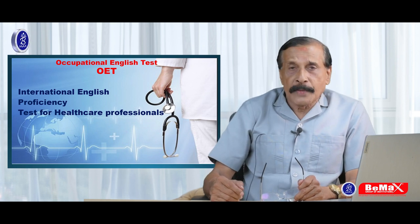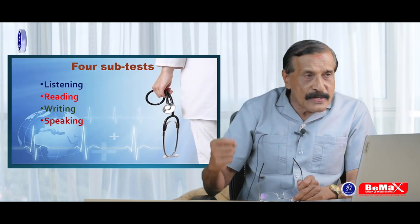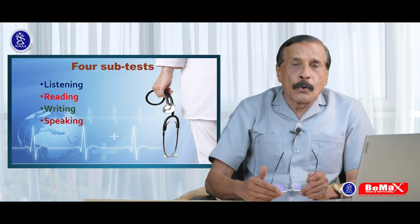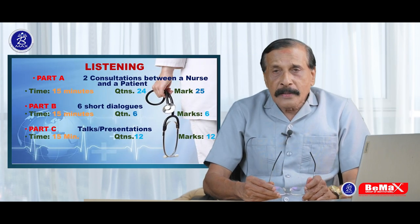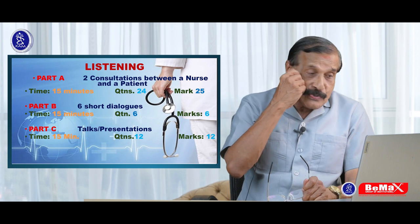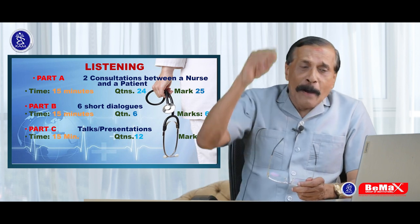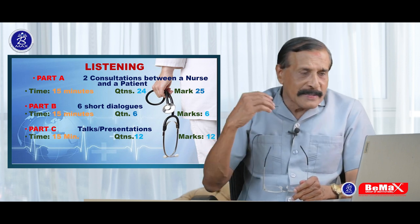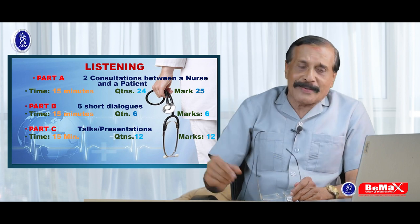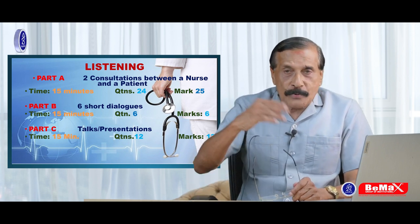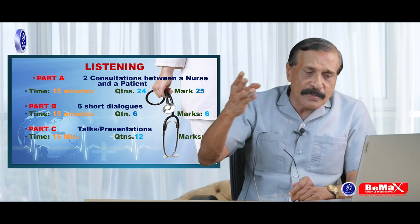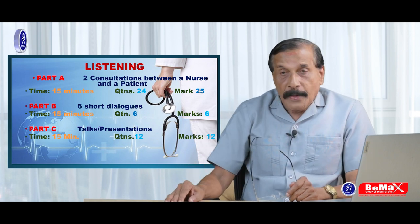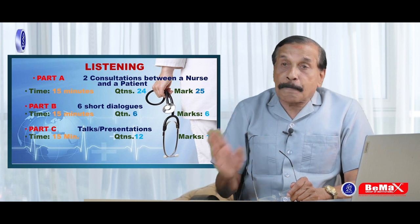OET has four subtests: Listening, Reading, Writing, and Speaking — LRWS. Let's have a quick look at Listening, the first subtest. It has three parts: Part A, Part B, and Part C. Listening and Reading are common for all professions, whereas Writing and Speaking are profession-specific.